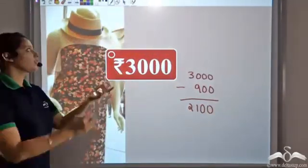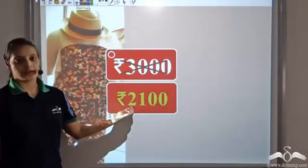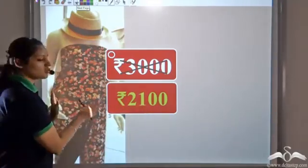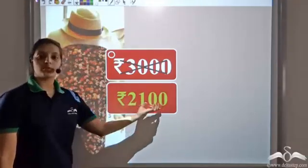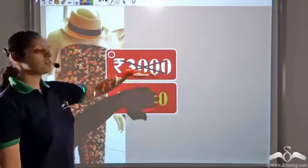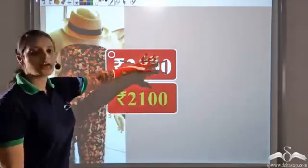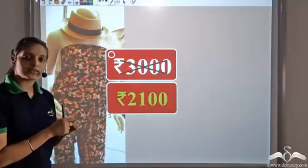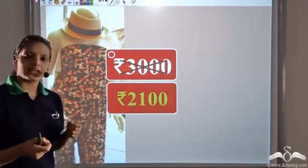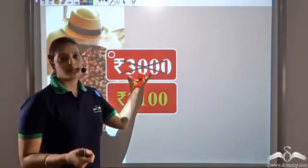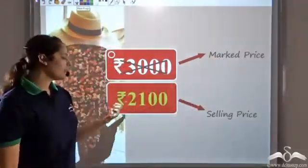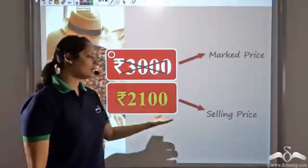Rather than paying Rs.3000, the customer pays only Rs.2100. Since the customer pays Rs.2100, this is the selling price of the dress. Then what about Rs.3000? Rs.3000 was the price printed or marked on the dress. The price written on any article when we go to a store is called the marked price or the listed price, and the price at which you actually get it is called the selling price.